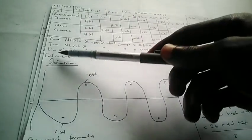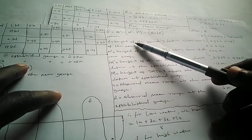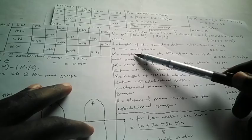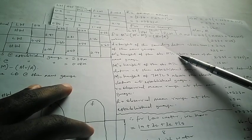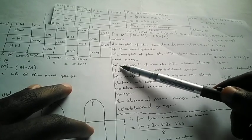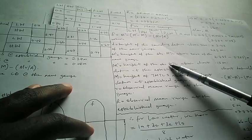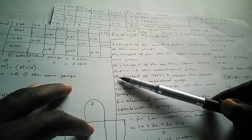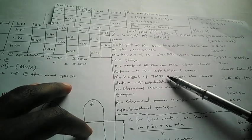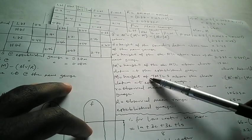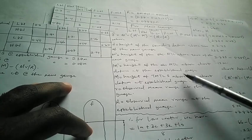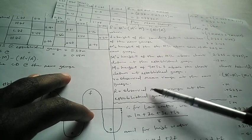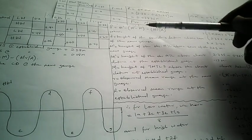Let's look at what each term in the formula means. D represents the height of the chart datum above zero of the new gauge. Small m-prime represents the height of the observed mean tide level above zero of the new gauge. Capital M-prime represents the height of the observed mean tide level above chart datum at the established gauge. Capital M (without prime) represents the height of the true mean tide spring above chart datum at the established gauge. Small r is the observed mean range at the new gauge, and capital R is the observed mean range at the established gauge.